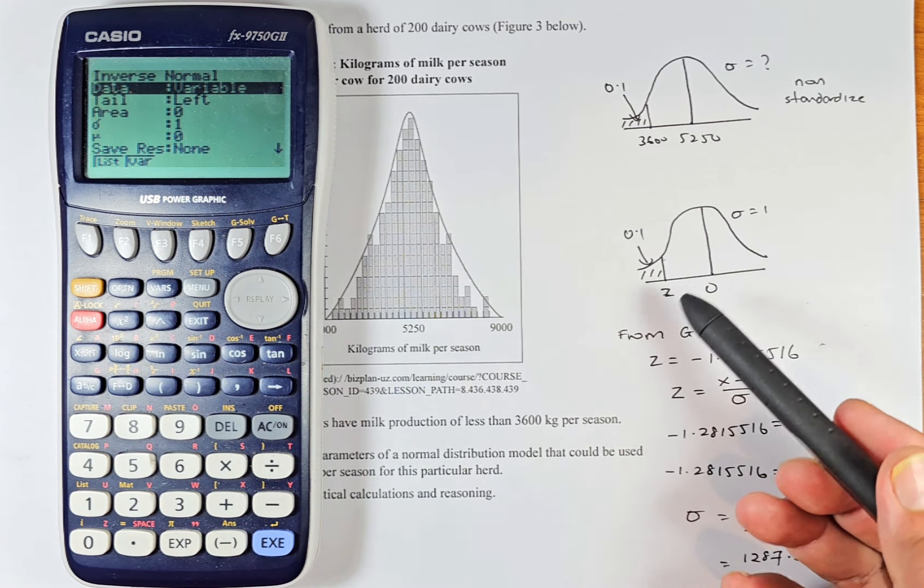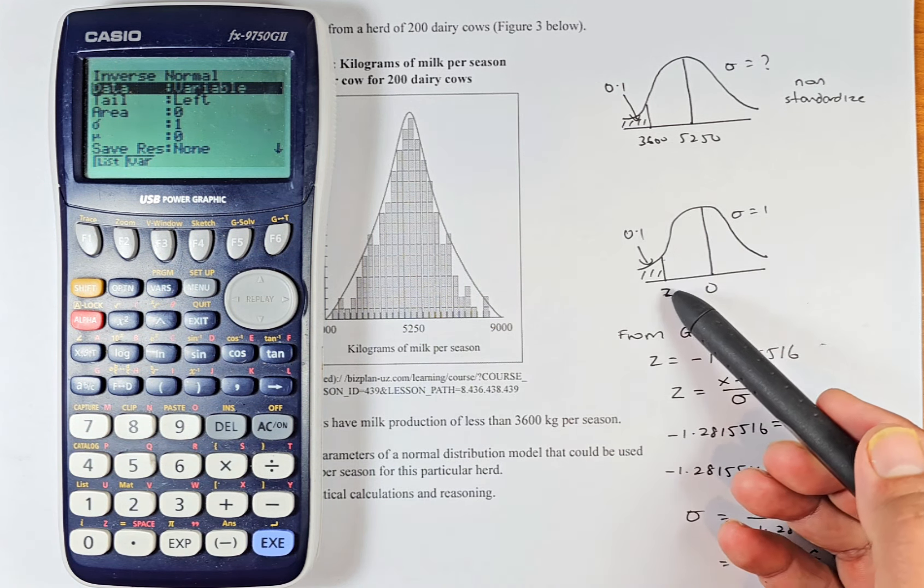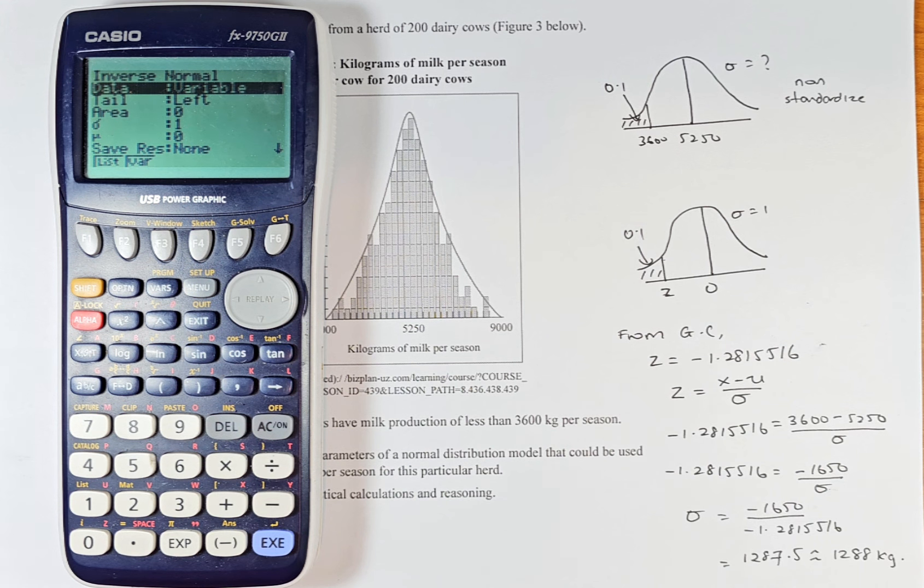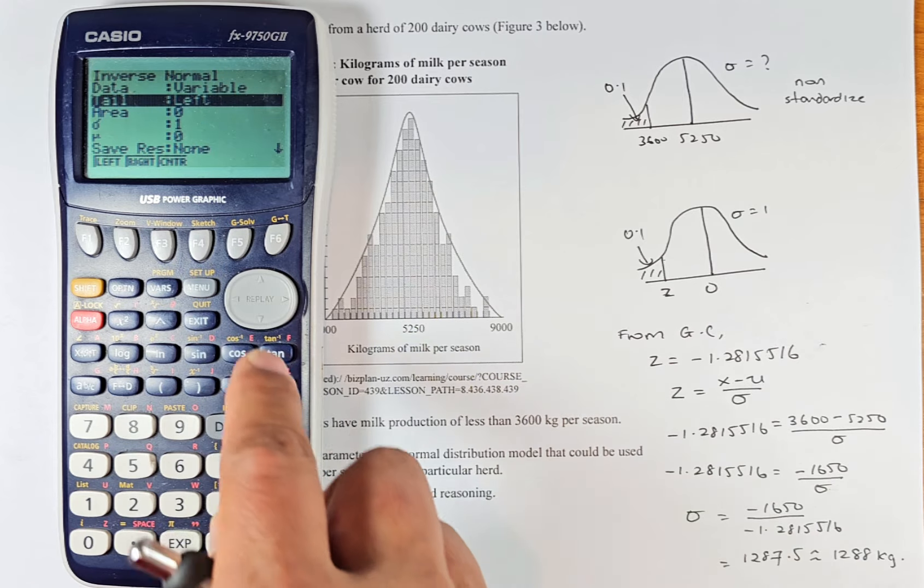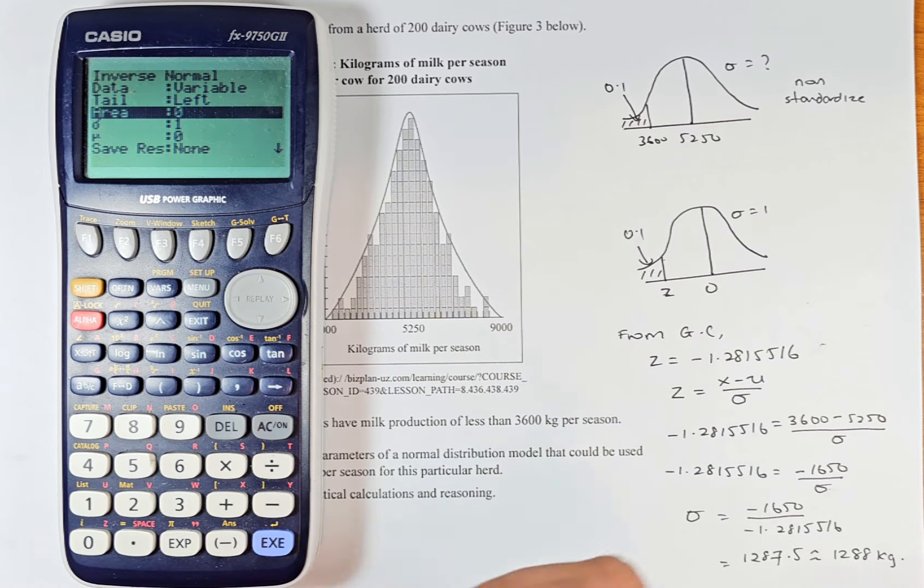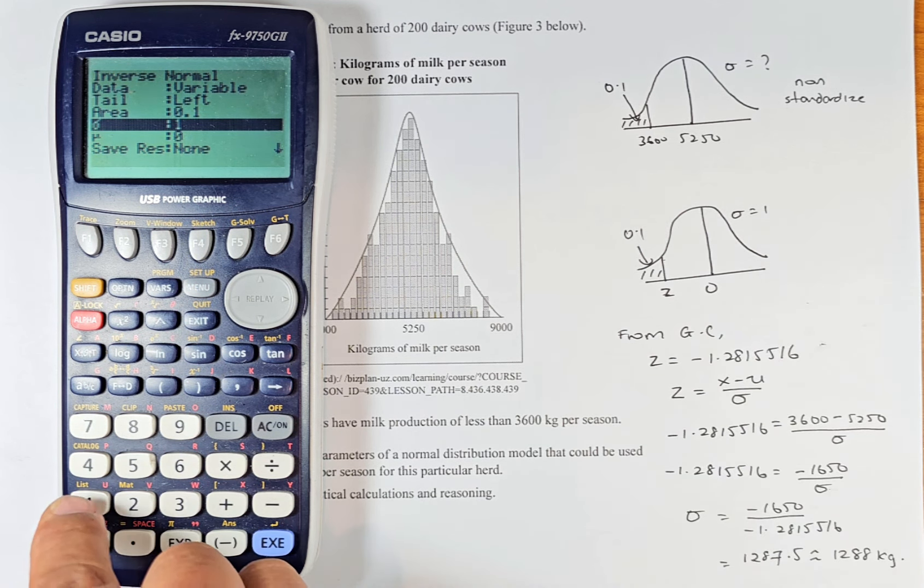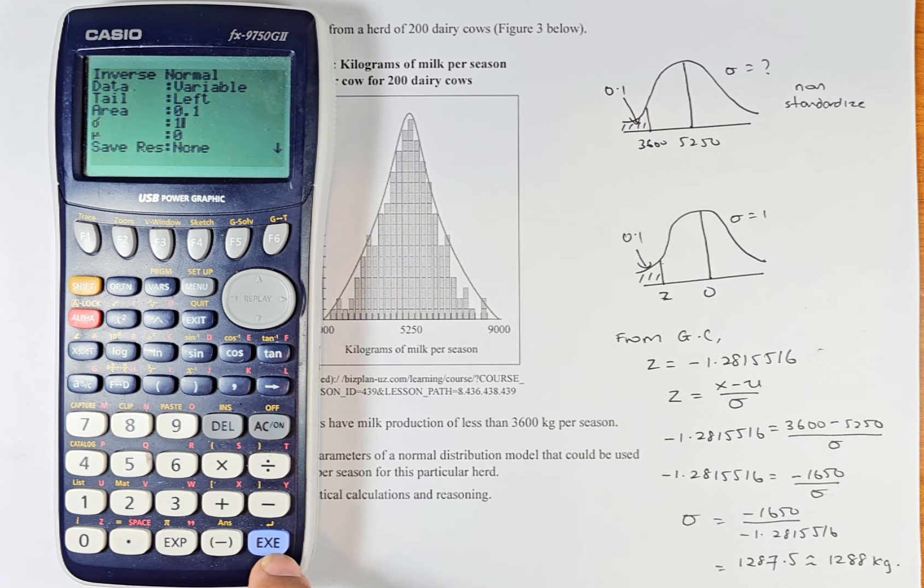So the data is on the left. We are working on this now to get the z value. So to standardize it, data is variable, it's on the left. We are all done. Area is 0.1. So we're going to click, key in 0.1, execute. Sigma is 1 because we are standardizing it, 1 and then mu is 0. And then we just execute.